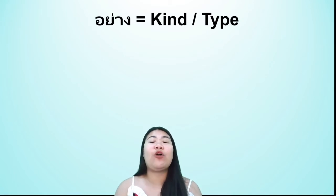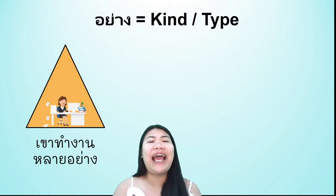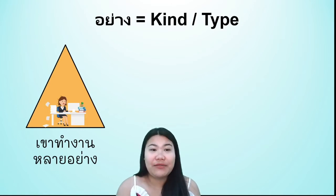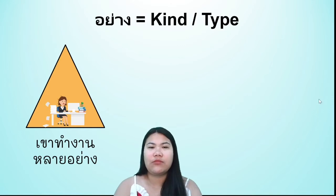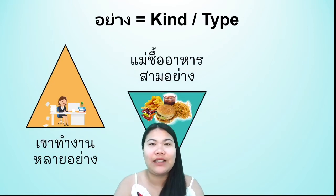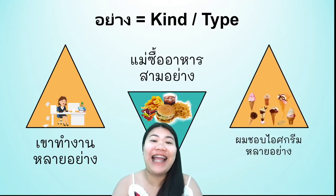Next, the word อย่าง, which means 'type' or 'kind.' The first sentence: เขาทำงานหลายอย่าง — he has worked many types of jobs. แม่ซื้ออาหารสามอย่าง — mom bought three types of food. ผมชอบไอศกรีมหลายอย่าง — I like many kinds of ice cream.